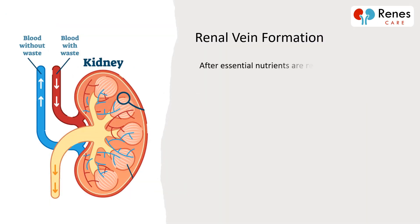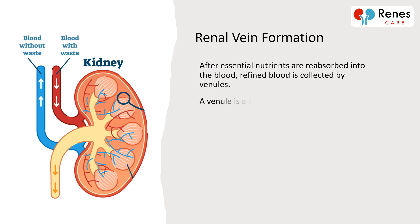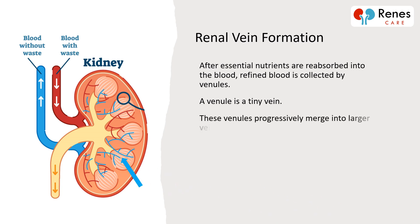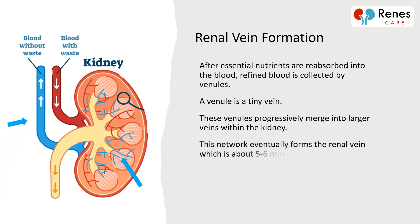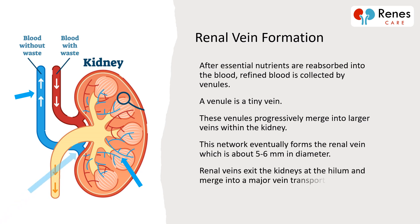After essential nutrients are reabsorbed into the blood, refined blood is collected by venules — tiny veins. These venules progressively merge into larger veins within the kidney, eventually forming the renal vein, which is about 5 to 6 millimeters in diameter. Renal veins exit the kidneys at the hilum and merge into a major vein transporting blood back to the heart.